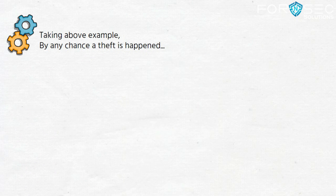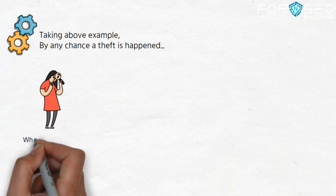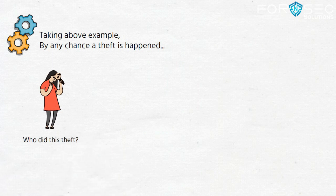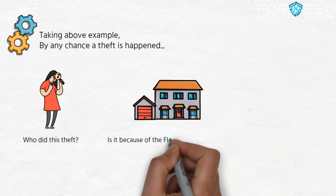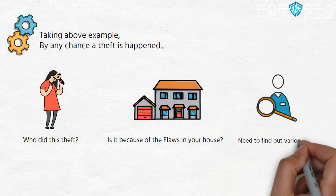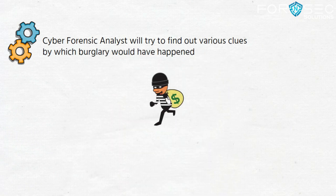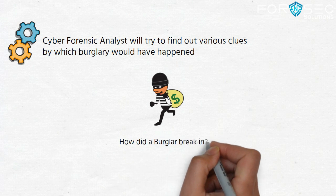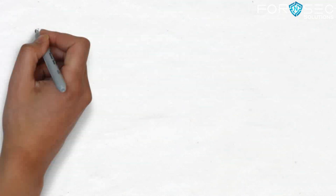Now, cyber security is prevention — but what if there is any failure while doing this? That is where cyber forensic comes in. Taking the same example: if you did not install proper locks and a theft happens, who did this theft? If by chance you were away and a theft occurred, who did it and how? The cyber forensic analyst will find out various clues about how the burglary happened — how the burglar got inside, whether doors were left open or a lock was attacked. That is, cyber security is prevention and cyber forensic is investigation.